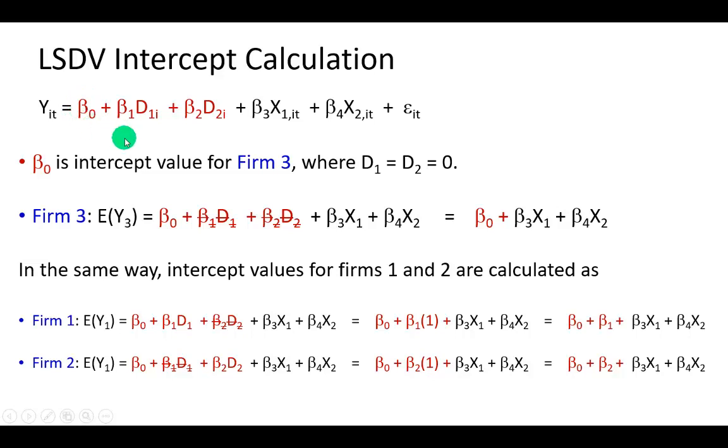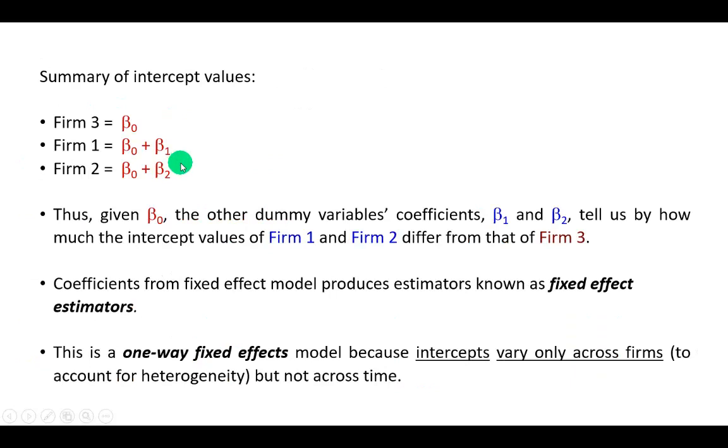And likewise, beta sub 2 calculates the difference between the intercept value for firm number 2 and the intercept value for the reference category. And we're going to see how this shakes out when we interpret our regression results.